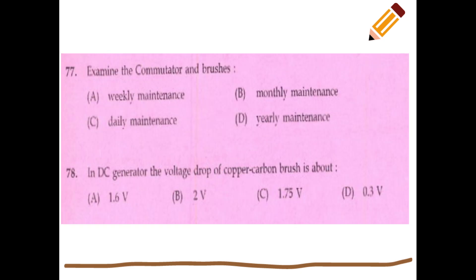Question 17: how do you examine commutators and brushes in DC generators? The voltage drop of a copper-carbon brush is about 0.3 volts in a DC generator.